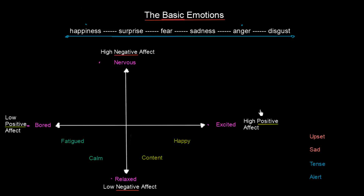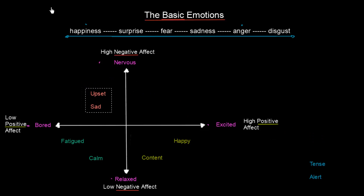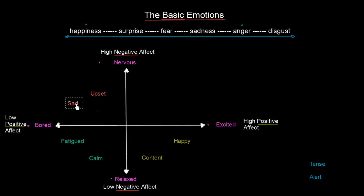Next we have upset and sad — both very negative moods. These go next to the high negative effect and low positive effect area. Sad is very close to bored; when you are bored and something suddenly starts to have some negative effect on you, you move toward sad. Upset is quite close to nervous, so we place it right there.